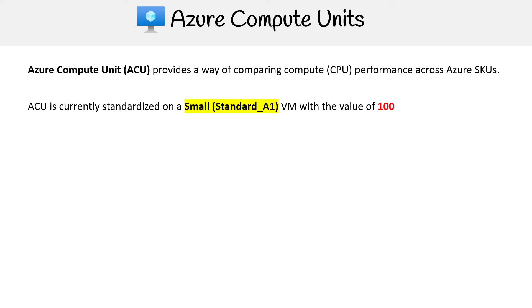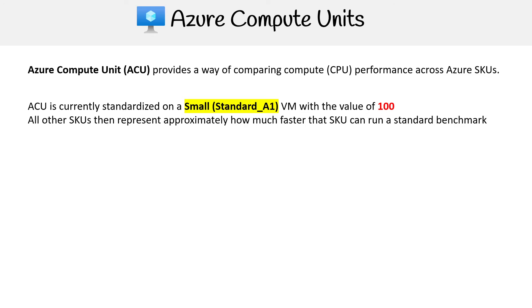ACU is currently standardized on a small standard A1. A1 is a previous series, so it's not something you'd generally be launching, but everything is based off of that one. Those are given a value of 100 — just an arbitrary number to give it a points reference against other machines. All other SKUs then represent approximately how much faster that SKU can run a standard benchmark.